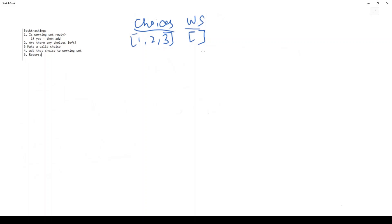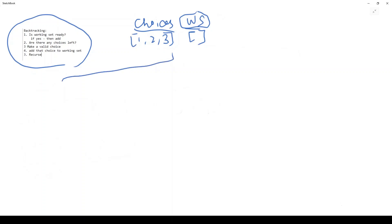In general, all backtracking algorithms work on one permutation at a time — we find one permutation, then make another choice and find the next. I've written 'WS' here for working set. You'll see how we make choices and fill up the working set. We start with [1, 2, 3] as our choices and nothing picked yet, so we need to make a choice.